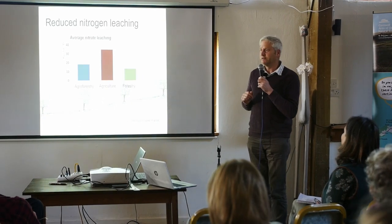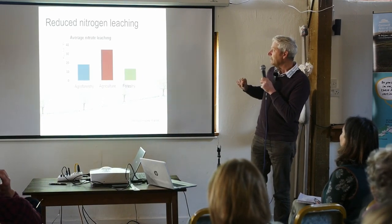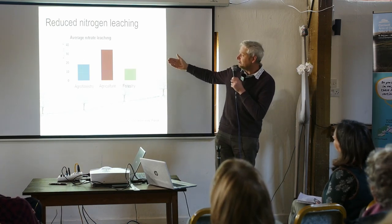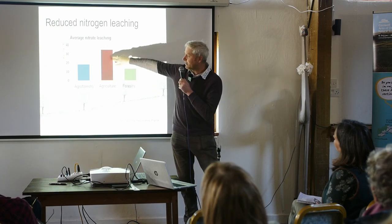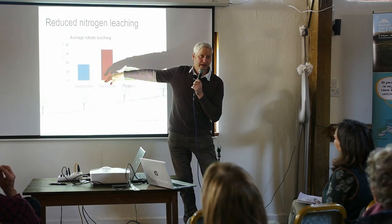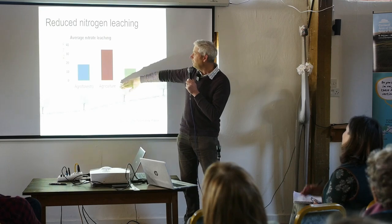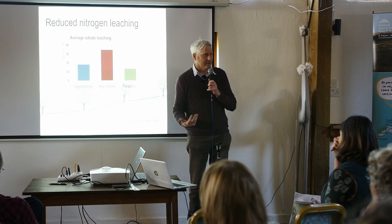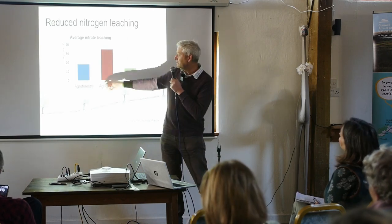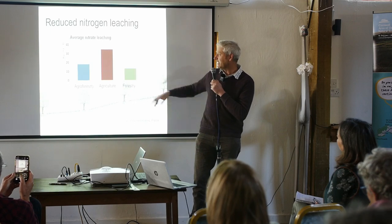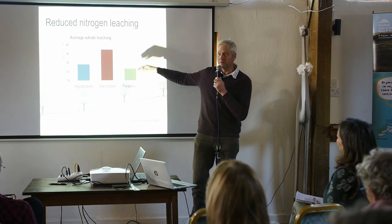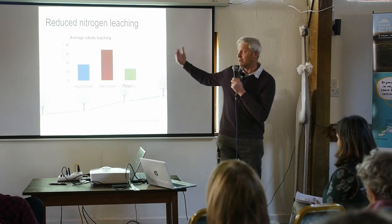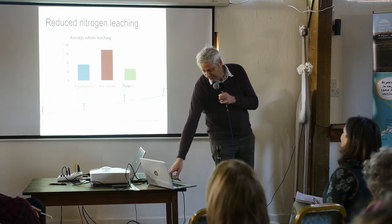One particular study from France shows nitrates: a typical cropped agriculture system has a lot of leaching, forestry shows very little leaching, and agroforestry — where you've got a mix of trees and farming — is a bit more than forestry, but really close to that natural system and obviously much less than agricultural levels.